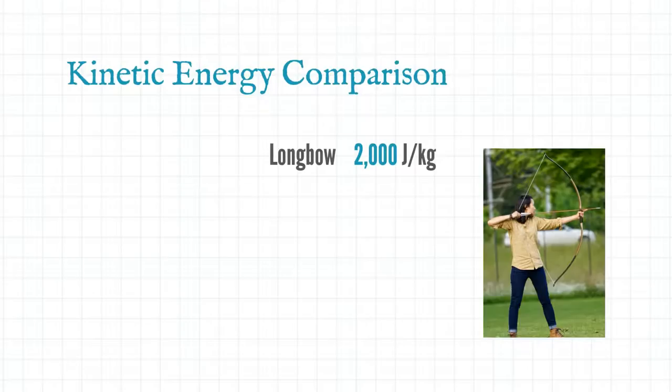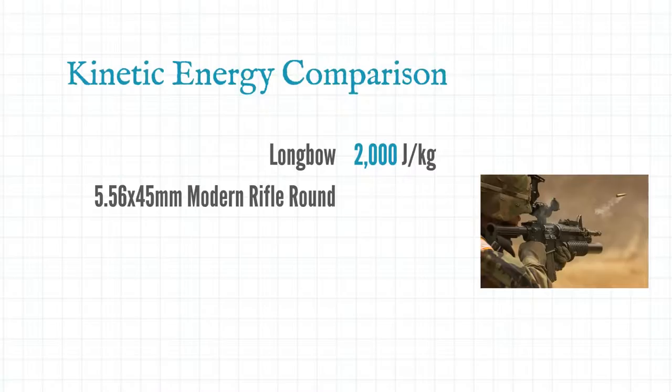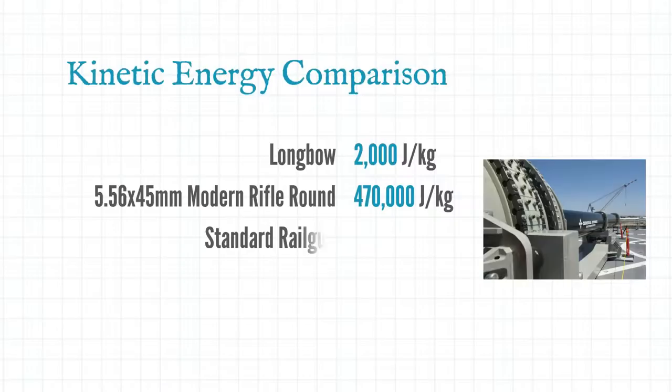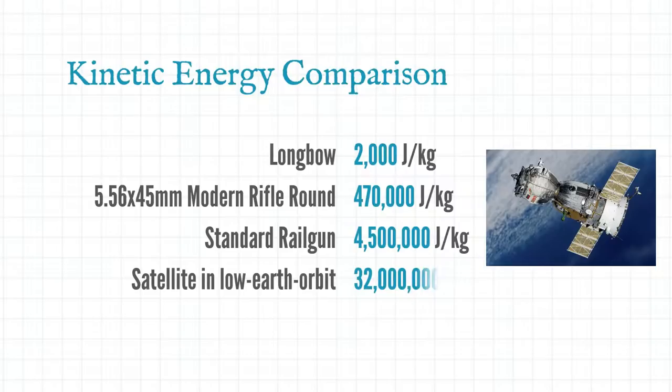Let's start with some simple examples. A medieval longbow imparts a force of 2,000 joules per kilogram. A modern day rifle round 470,000 and a railgun a whopping 4.5 million joules per kilo. But these are earth based weapons. We're talking about going into space. A satellite travelling in low earth orbit imparts 32 million joules per kilo.